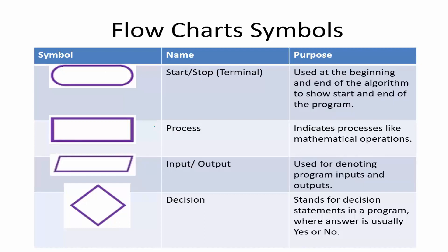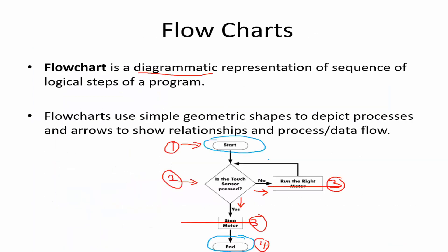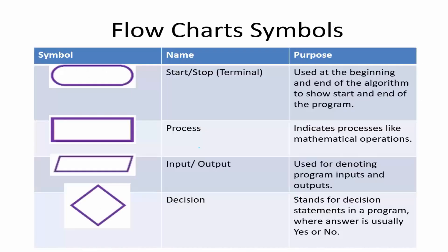Any activity within your set of instructions is placed inside a rectangle, which indicates a process like a mathematical operation. If you have anything to do within your flowchart, you mention it within a rectangle. For example, 'run the right motor' is a process — an activity to be done. Stopping the motor is also an activity. If you have something to be done as an activity, you list it within a rectangle. For example, if you want to add two numbers, that addition operation can be written in this box.